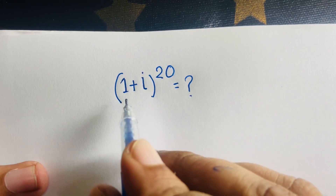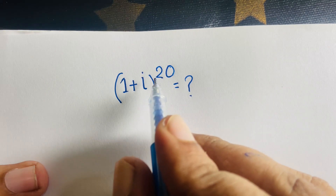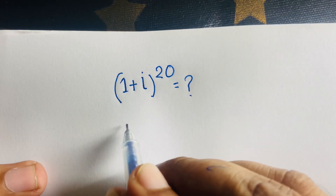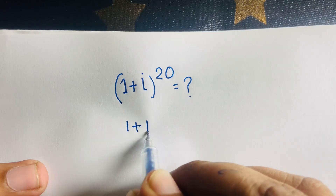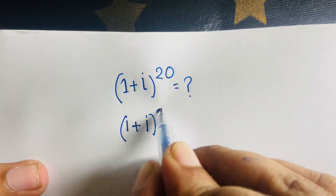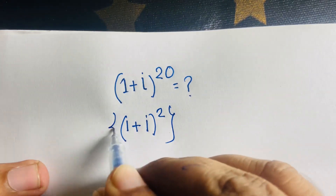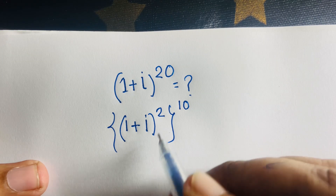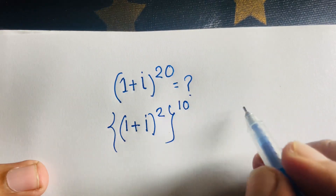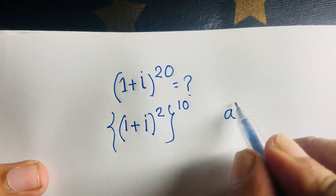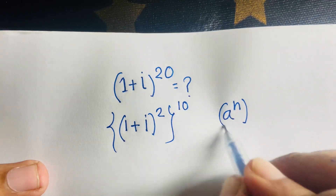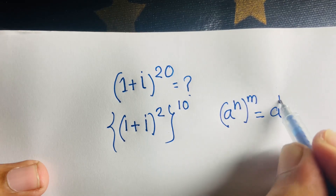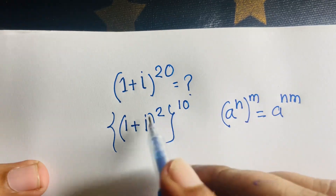First, (1 + i) has power 20. I can rewrite this as [(1 + i)^2]^10, because 2 times 10 equals 20. We use the exponential rule: (a^n)^m = a^(n×m).